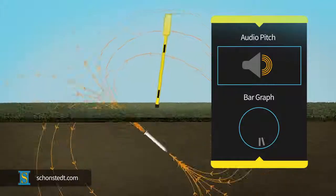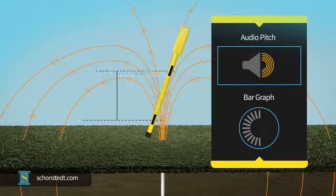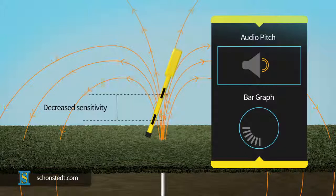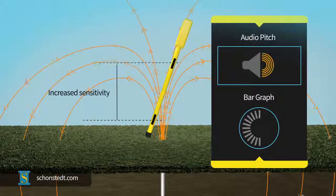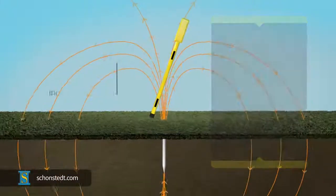The fixed spacing between the sensors determines the overall length of the locator and has an impact on the field difference detected, or the sensitivity of the locator. The further apart the sensors are, the more sensitive the locator is.